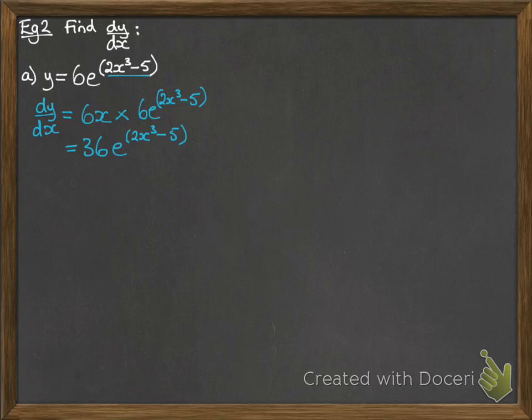And we get 36... Oops, a little mistake. Hold on, I'll just fix that. There we go, 36xe to the 2x cubed minus 5.